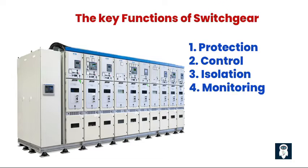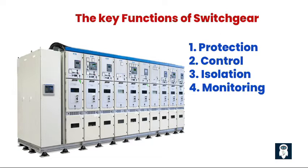Third, Isolation — switchgear provides a means to isolate specific electrical circuits or equipment for maintenance, repairs, or when necessary to prevent further damage. This feature allows workers to safely work on specific areas without interrupting the entire electrical supply. Fourth, Monitoring — switchgear includes meters and relays that monitor electrical parameters such as voltage, current, frequency, and power factor. These measurements provide vital information for efficient power management, identifying potential issues, and optimizing energy consumption.